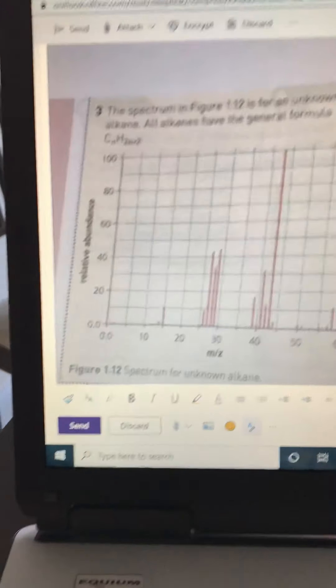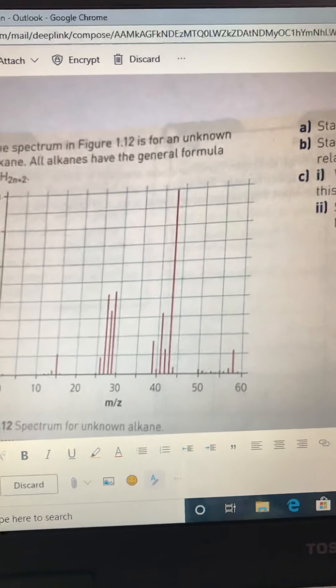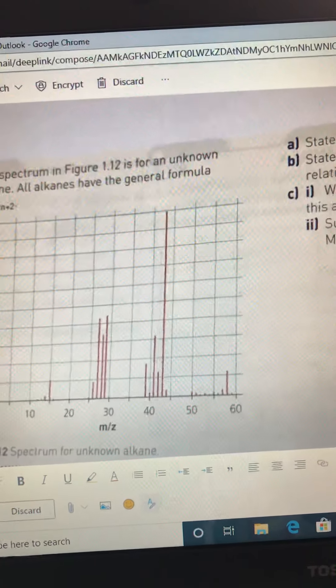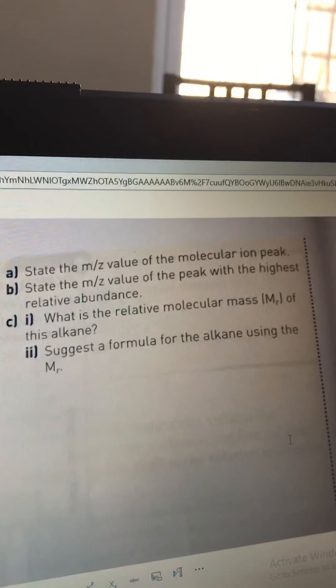Relative abundance is measured in percent, and looking down here I'd say that's probably about 44, maybe, yeah probably about 44.